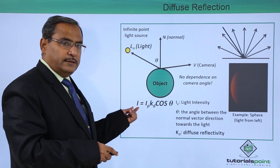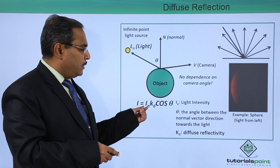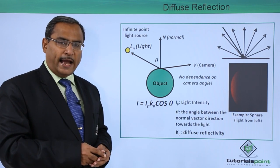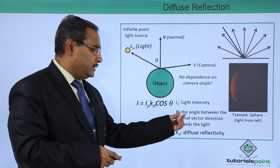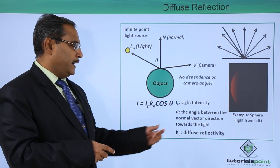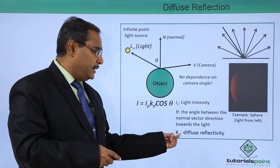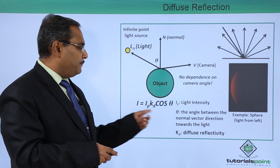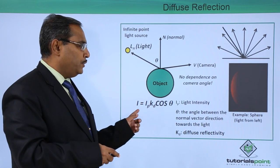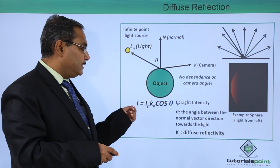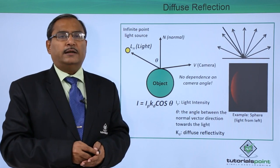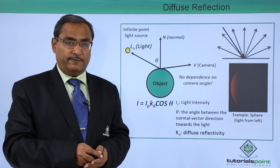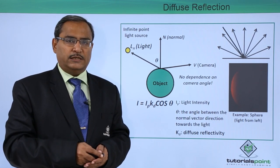The intensity is equal to I = Ip * kd * cos(θ), where Ip denotes the light intensity, theta is the angle between the normal vector and the direction toward the light, and kd is the diffuse reflectivity. This is the basic formula with which we can calculate the intensity. We have discussed the Lambertian cosine formula and what diffuse reflection is. Thanks for watching.